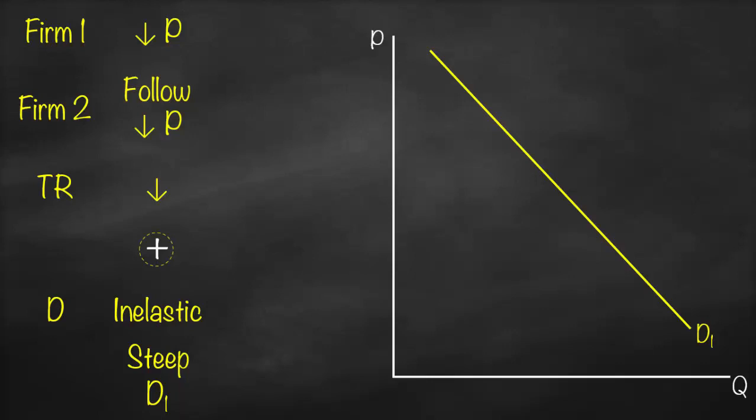What if firm one decided to do the opposite and increase the price? Customers will leave firm one and go to firm two because firm two is cheaper. Therefore firm two will not follow the strategy — they are not going to react because they will be better off. Consequently, if firm one increases the price and their customers move to firm two, total revenue for firm one will decrease, meaning higher price and lower total revenue.